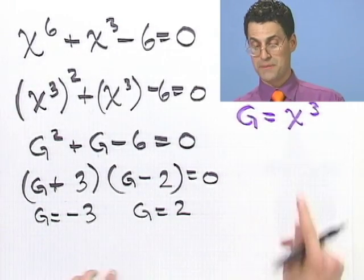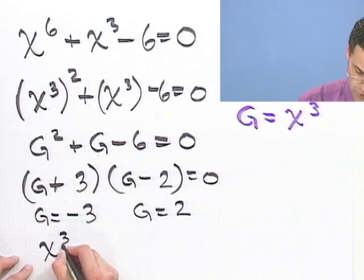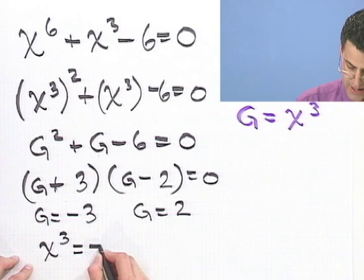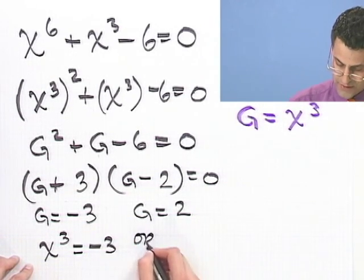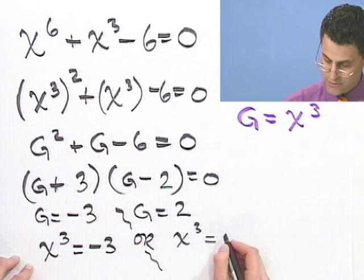I'm not out of the woods yet, because I have to put back x. So I see that x cubed equals minus 3. Or the other possibility is that x cubed equals 2.